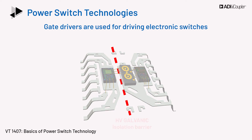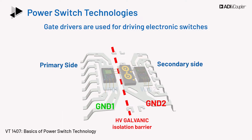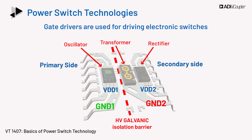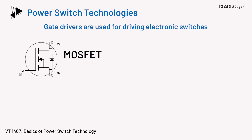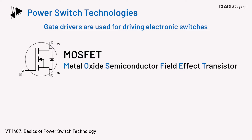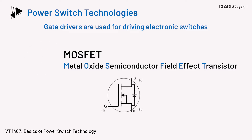Gate drivers are used for driving electronic switches. Before we discuss the need for gate drivers, we need to review some of the available power switches. The most common switches used in power conversion circuits are the MOSFET and the IGBT. MOSFET stands for metal oxide semiconductor field effect transistor. The MOSFET has three terminals called the gate, drain, and source.